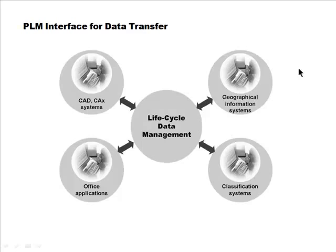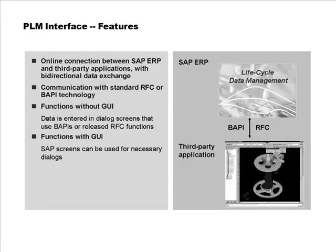The PLM interface allows an online connection between SAP and third-party applications — for example, a live connection between SAP and a computer-aided design program. It allows bi-directional data interchange: you can send data from SAP to the CAD/CAM system and get data from the CAD/CAM system back into SAP. You can set it up for automatic updates on design modifications, or do the update manually.